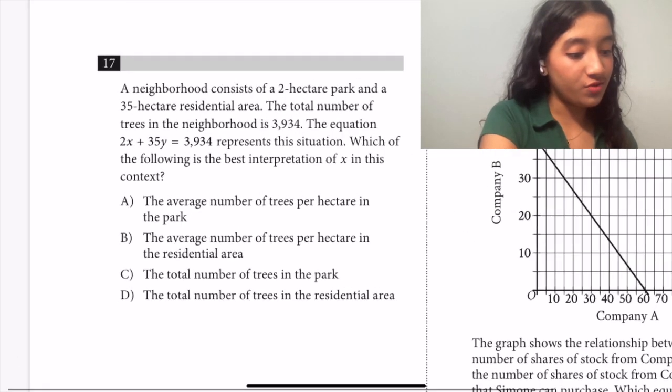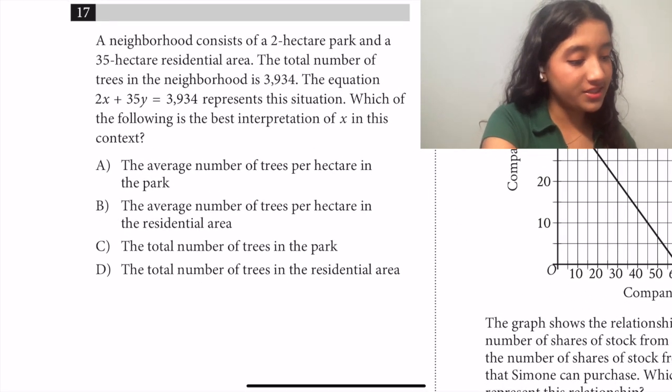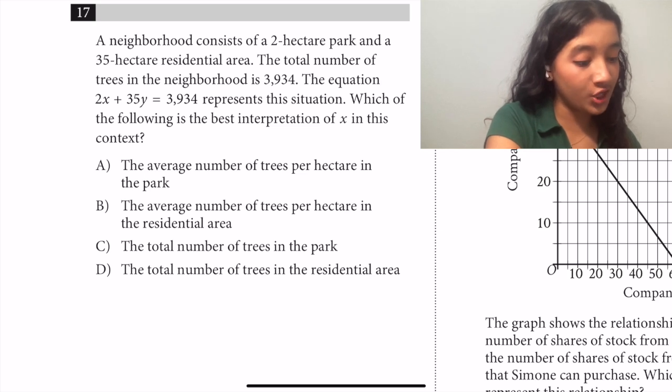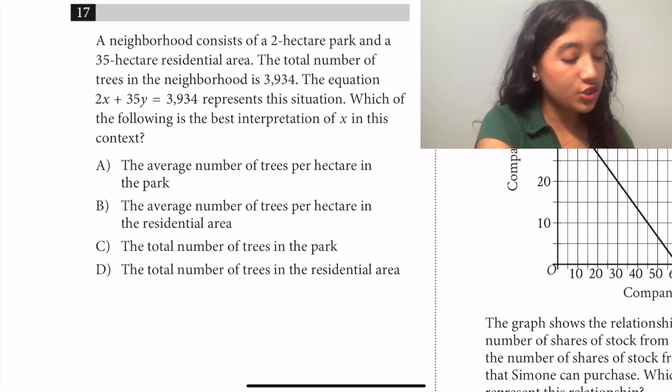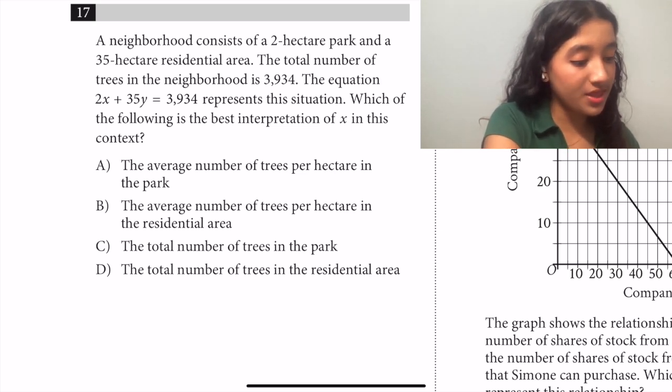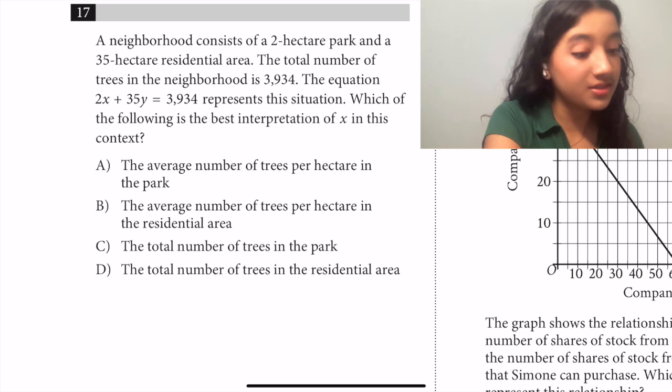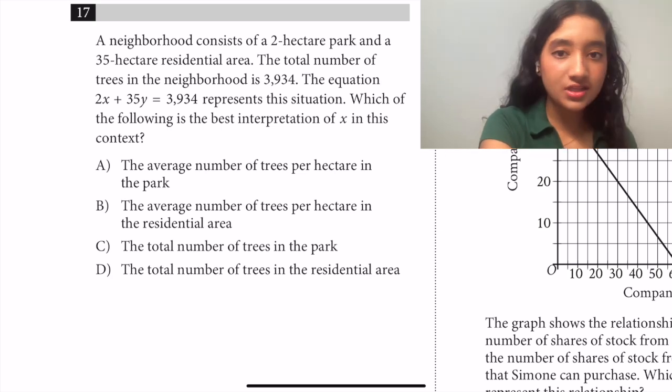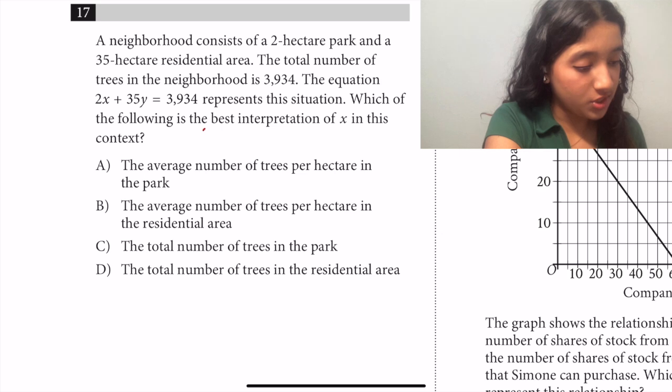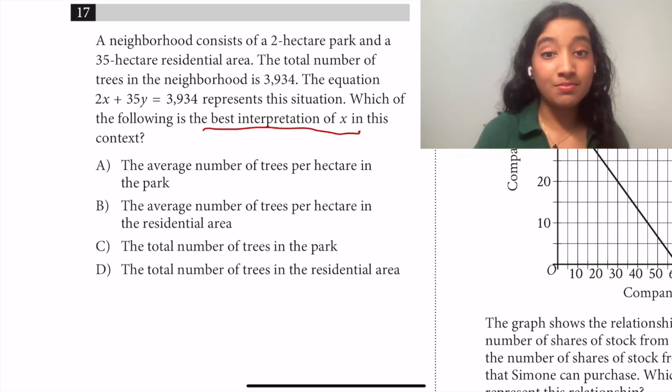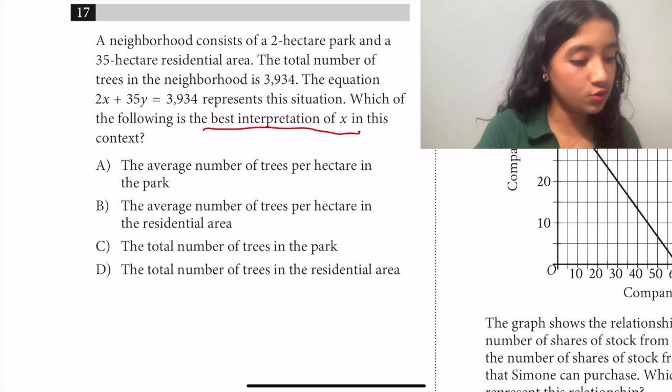Starting with question 17, a neighborhood consists of a 2-hectare park and a 35-hectare residential area. The total number of trees in the neighborhood is 3,934. The equation 2x + 35y = 3,934 represents this situation. Which of the following is the best interpretation of x in this context? First let's see what we're asking. We want the best interpretation of x, which just means that we want the meaning of x from this equation.